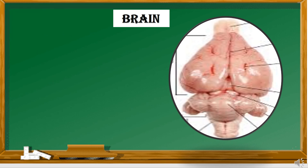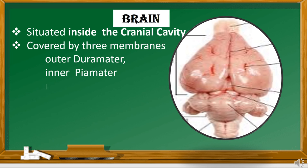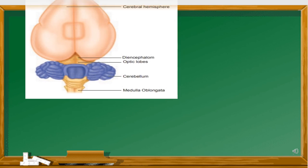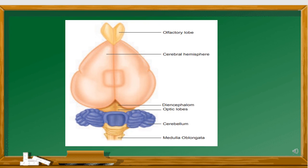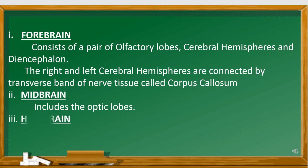The brain is covered by three membranes: the duramater, the inner piamater, and the middle arachnoid membrane. The brain has three regions: forebrain, midbrain, and hindbrain. The forebrain consists of a pair of olfactory lobes, cerebral hemispheres, and the diencephalon. The midbrain consists of the optic lobes. The hindbrain consists of the cerebellum, pons, and medulla oblongata.